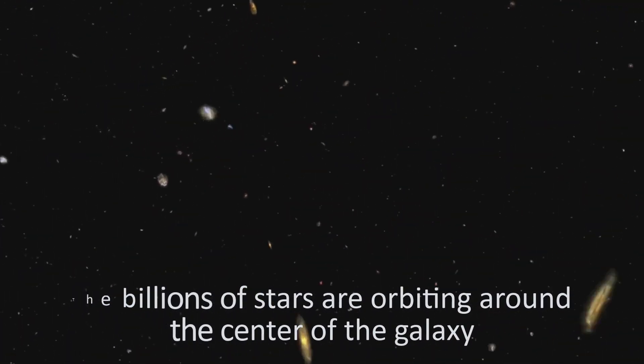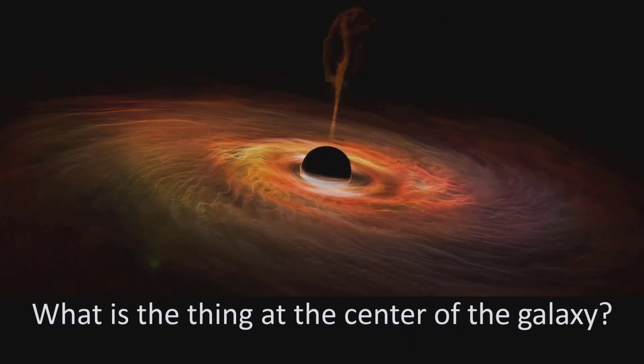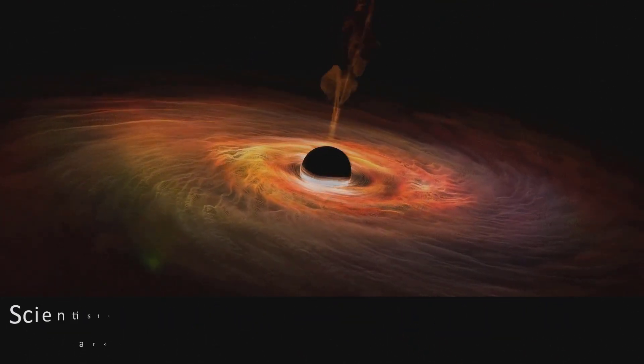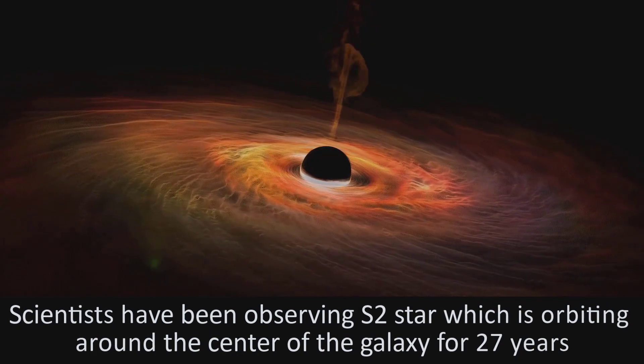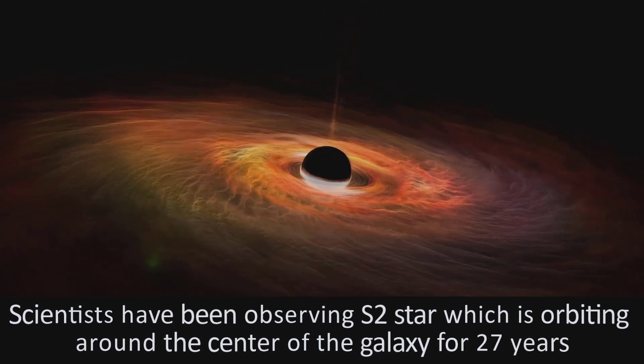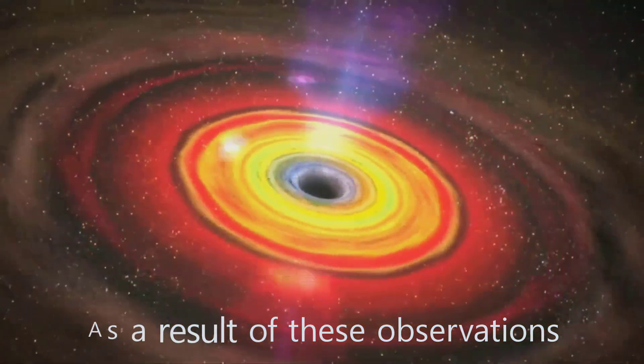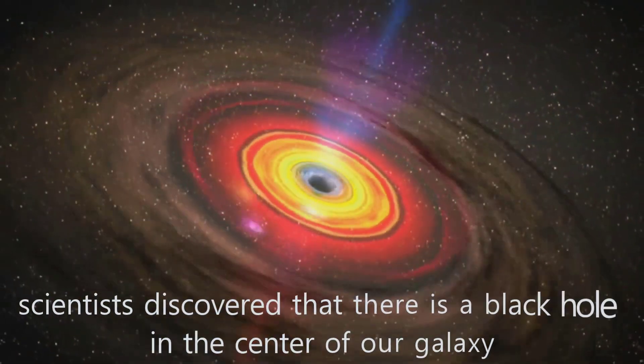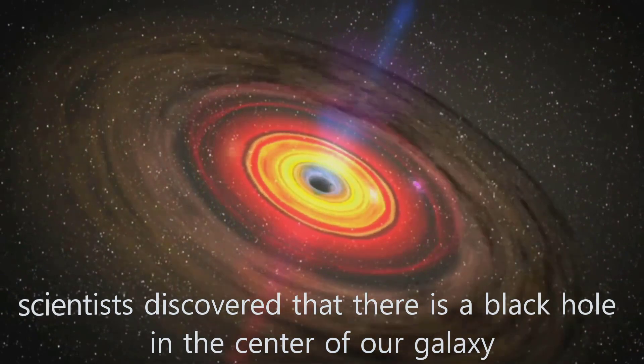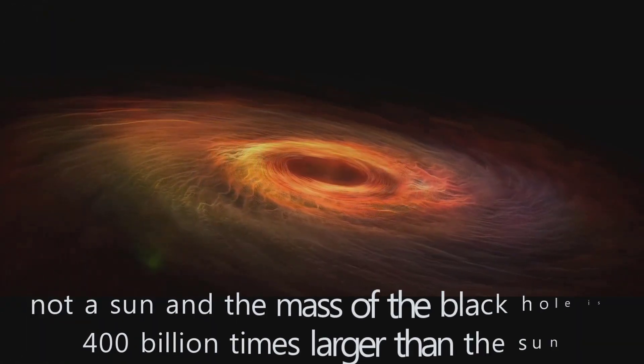The billions of stars are orbiting around the center of the galaxy. What is the thing at the center of the galaxy? Scientists have been observing the S2 star, which is orbiting around the center of the galaxy for 27 years. As a result of these observations, scientists discovered that there is a black hole in the center of our galaxy, not a Sun.